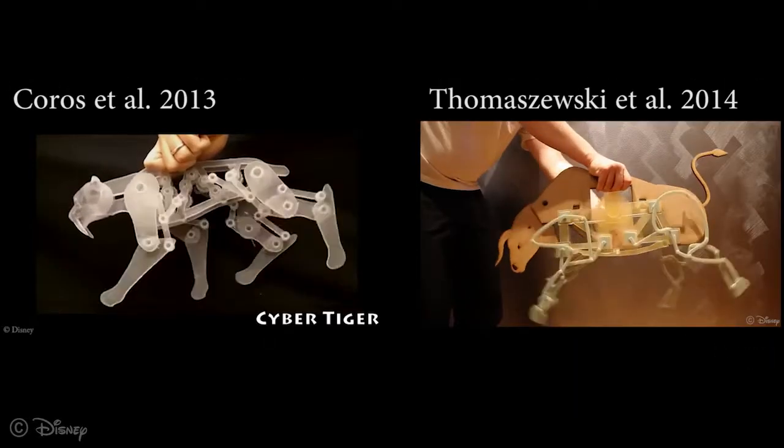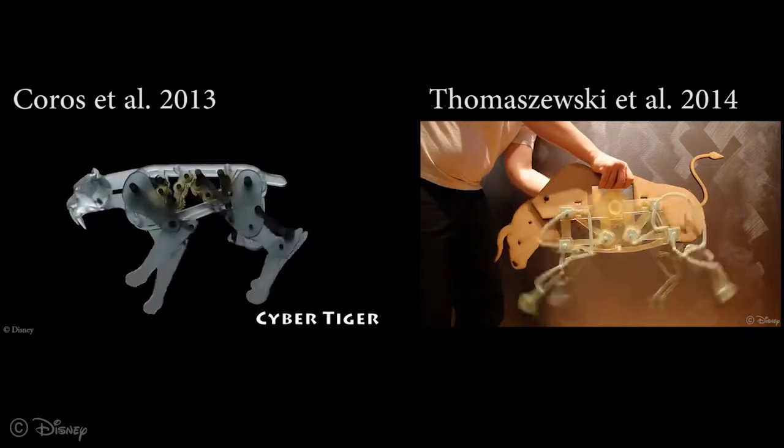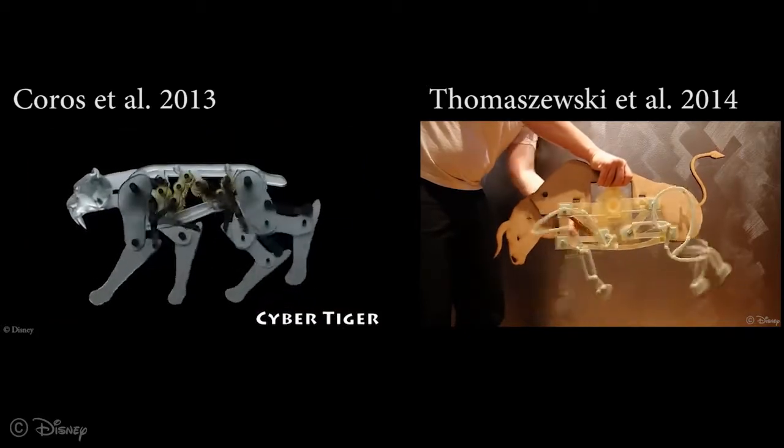Existing work can create automata, some with linkages, but these are not designed to walk on surfaces and their stability is untested. The goal is to design automata while considering these physical constraints.